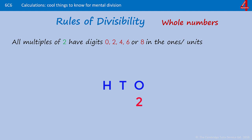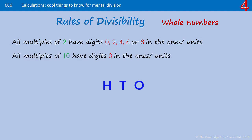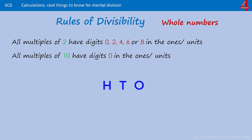The first rule of divisibility: all multiples of 2 have 0, 2, 4, 6, or 8 in the ones column, or units. They will be even numbers.